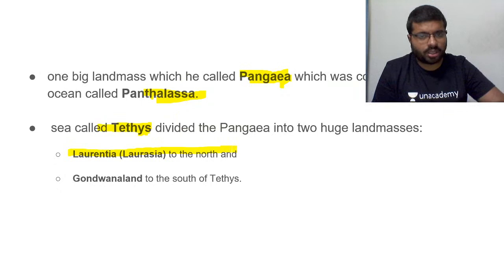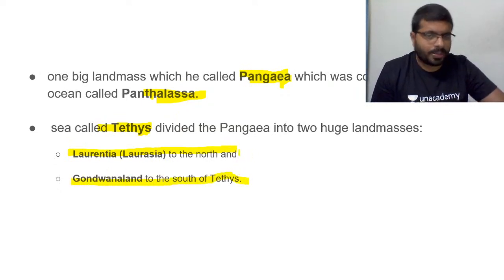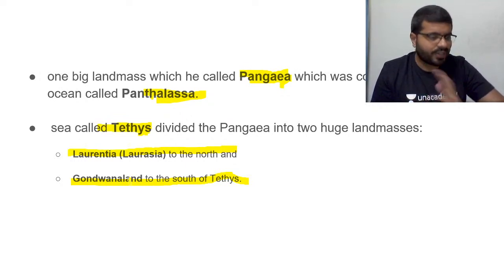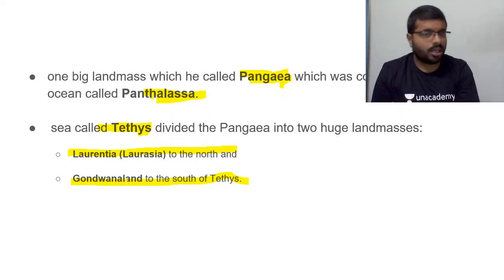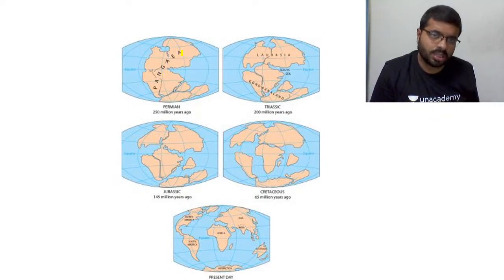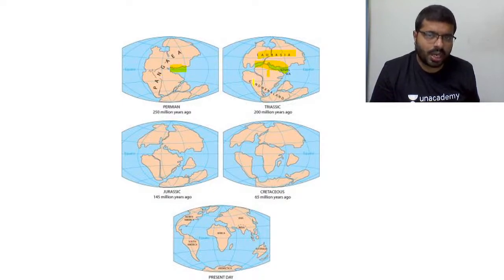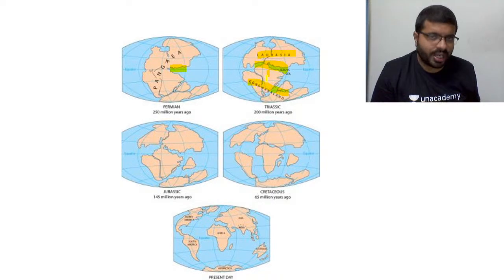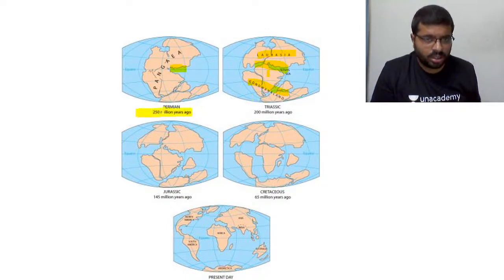Pangea and Panthalassa were separated by a smaller sea called the Tethys Sea. The Tethys Sea divided Pangea into two landmasses: Laurentia to the north and Gondwana Land to the south. Present-day Europe and North America formed Laurentia, while South America, Africa, India, Australia, and Antarctica formed Gondwana Land. This configuration started around 250 million years ago.